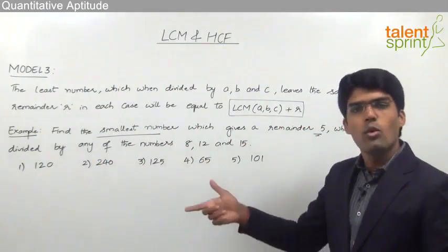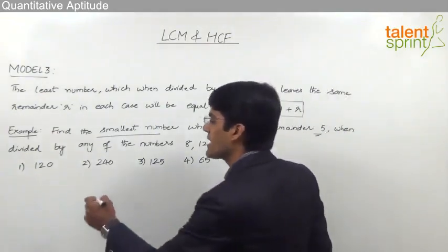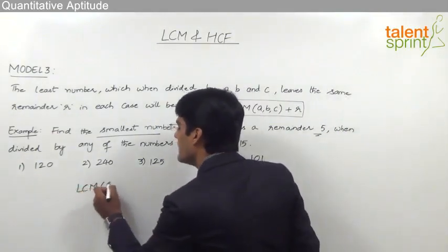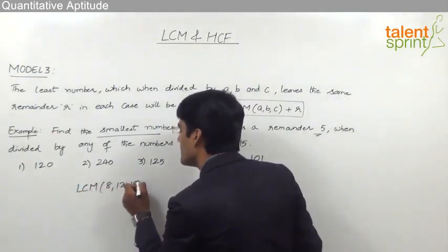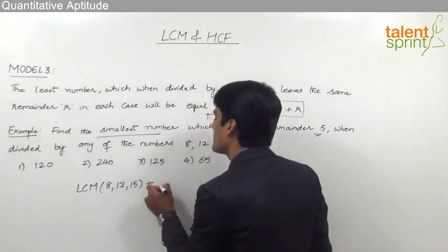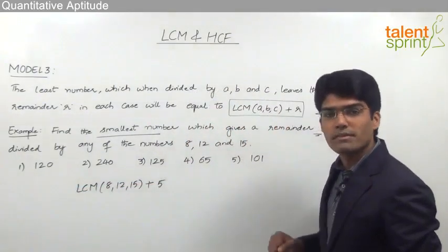So either you go by options and eliminate the wrong answers or the answer can be taken as LCM of 8, 12, 15 plus the remainder 5 going by the above concept.